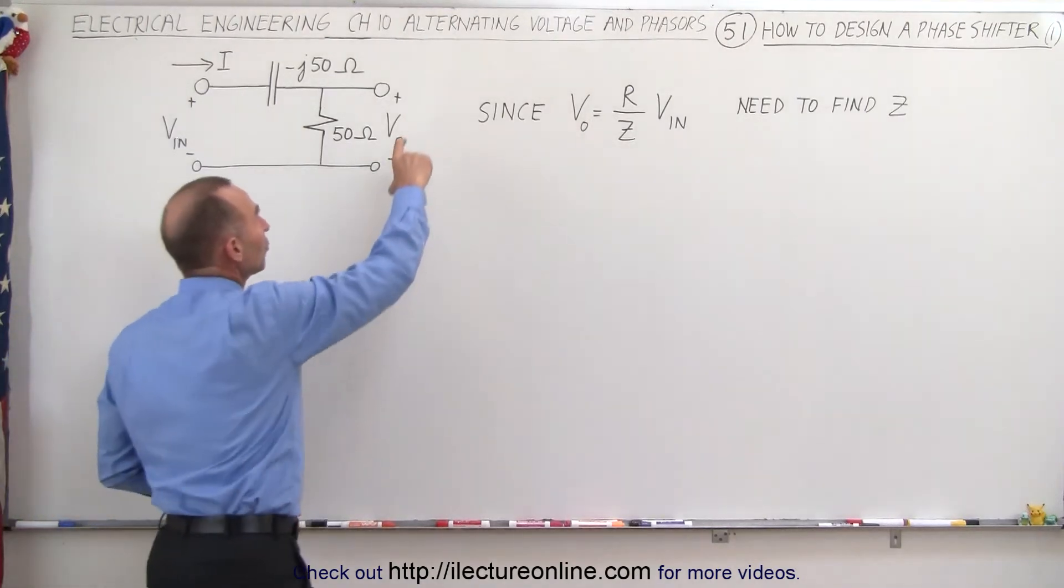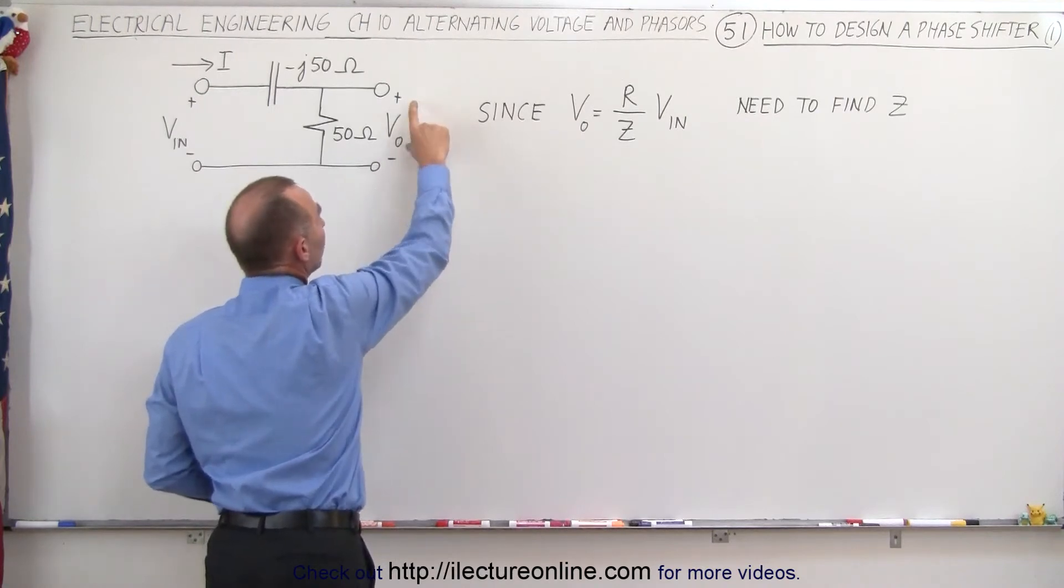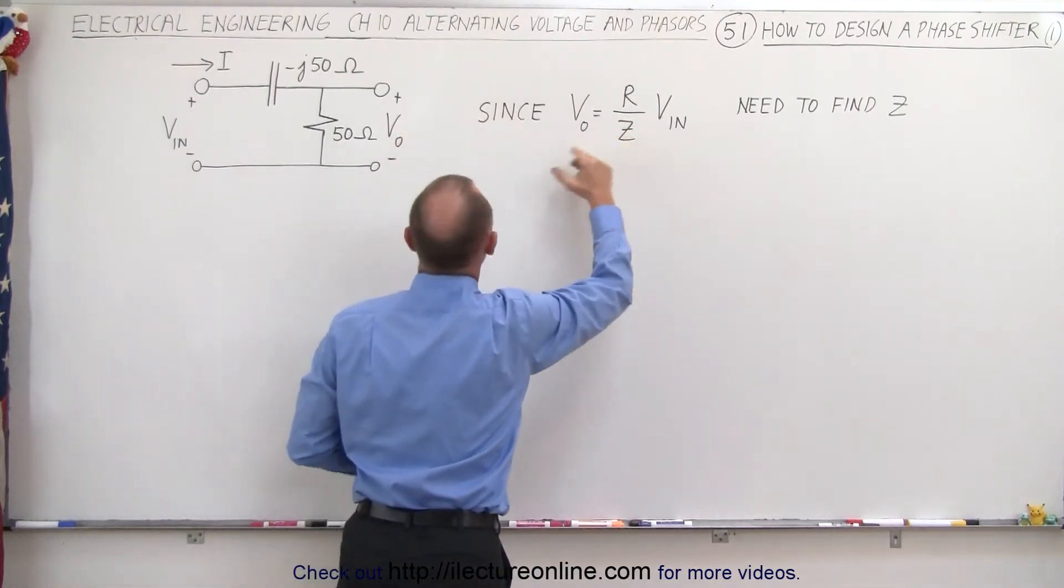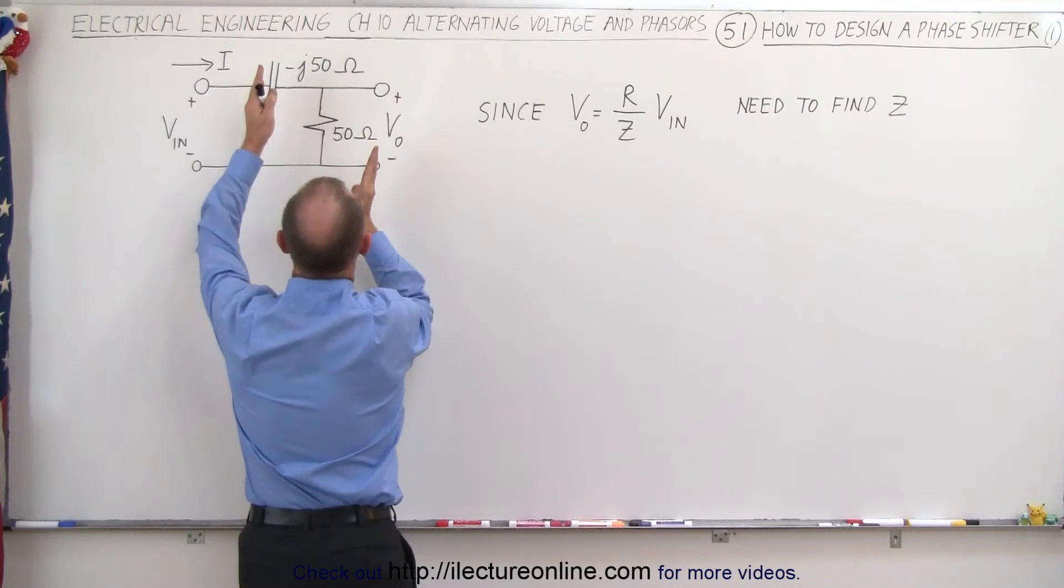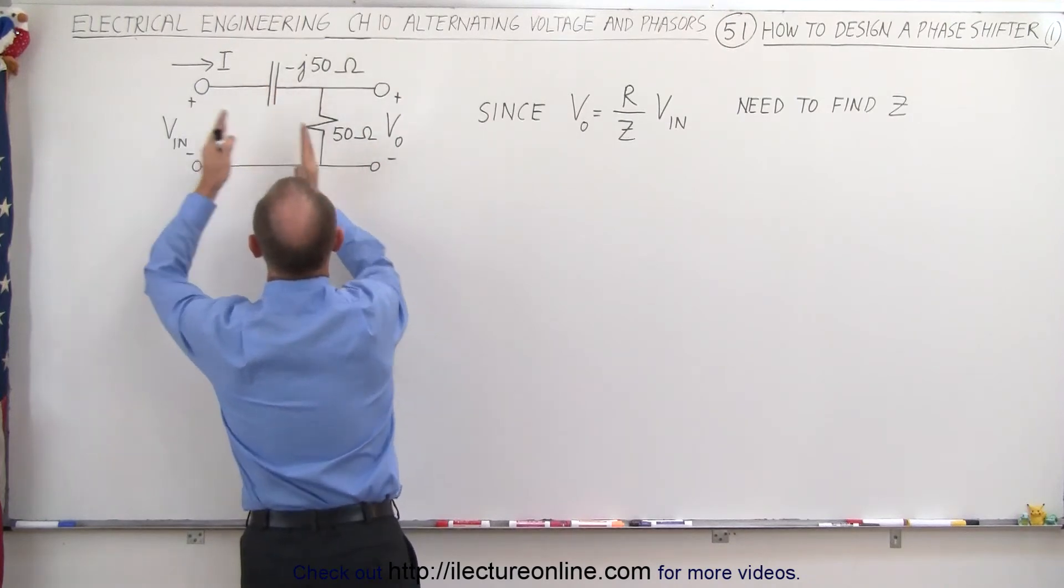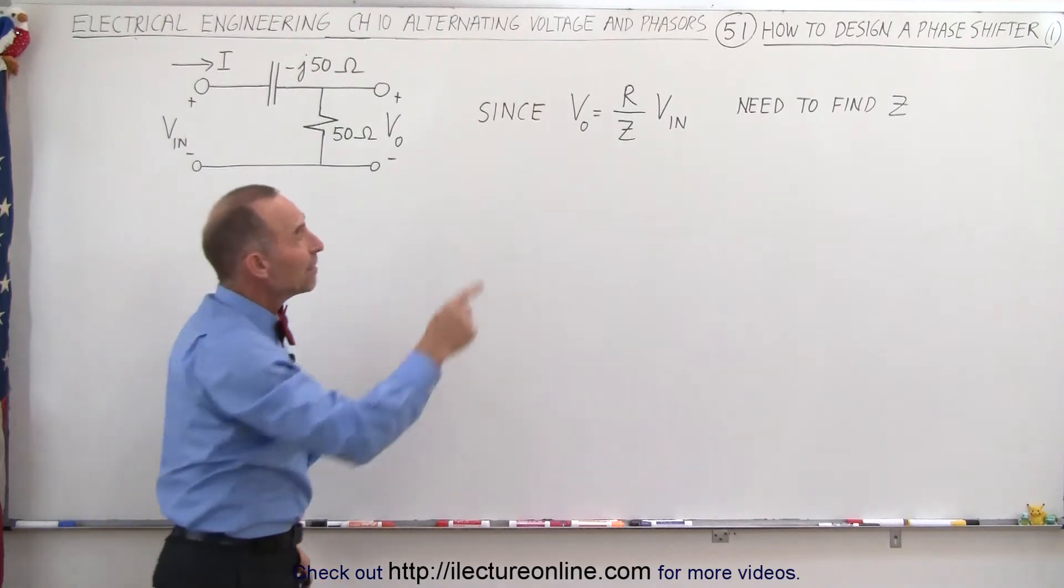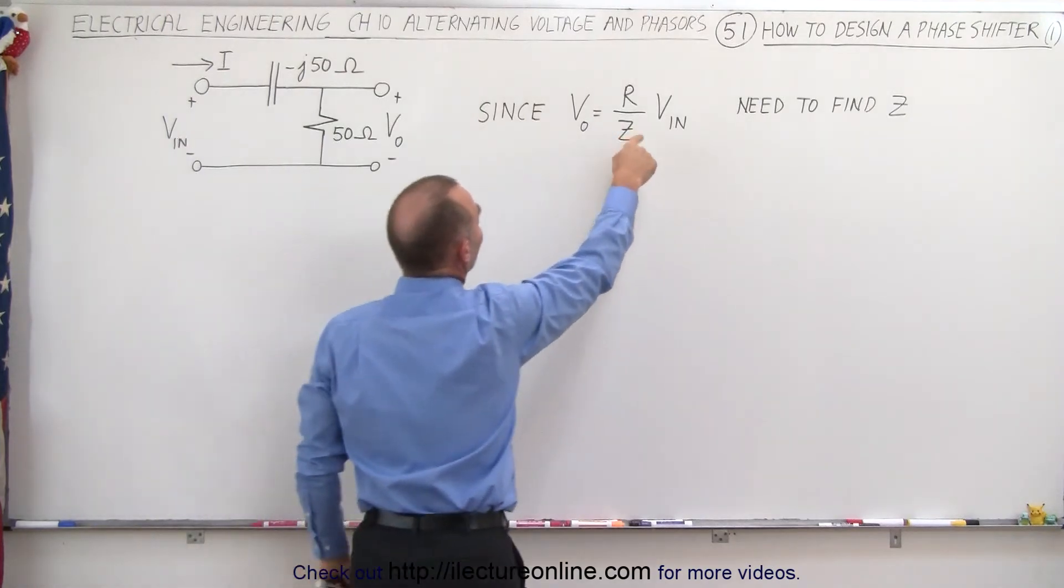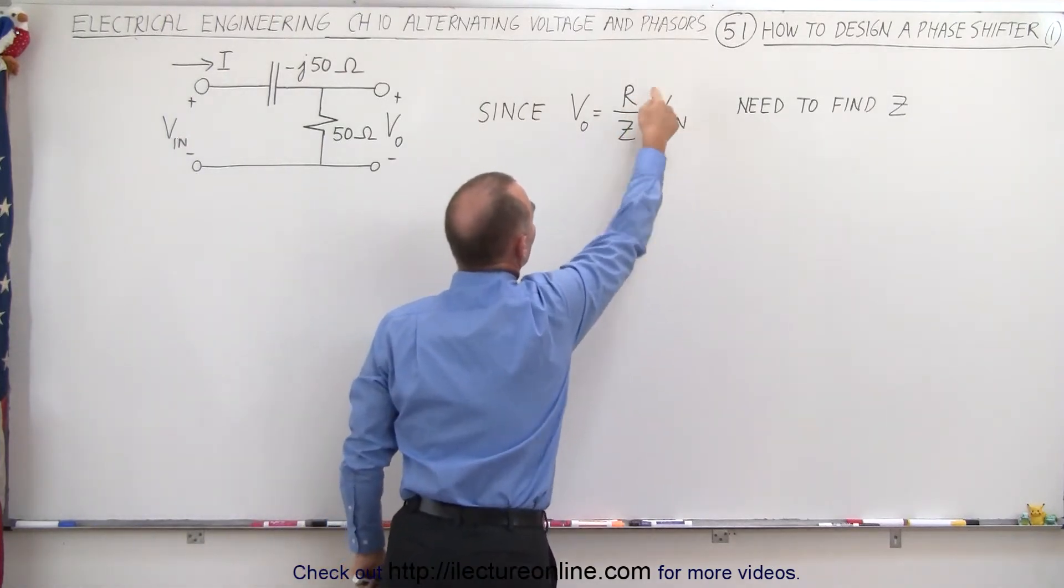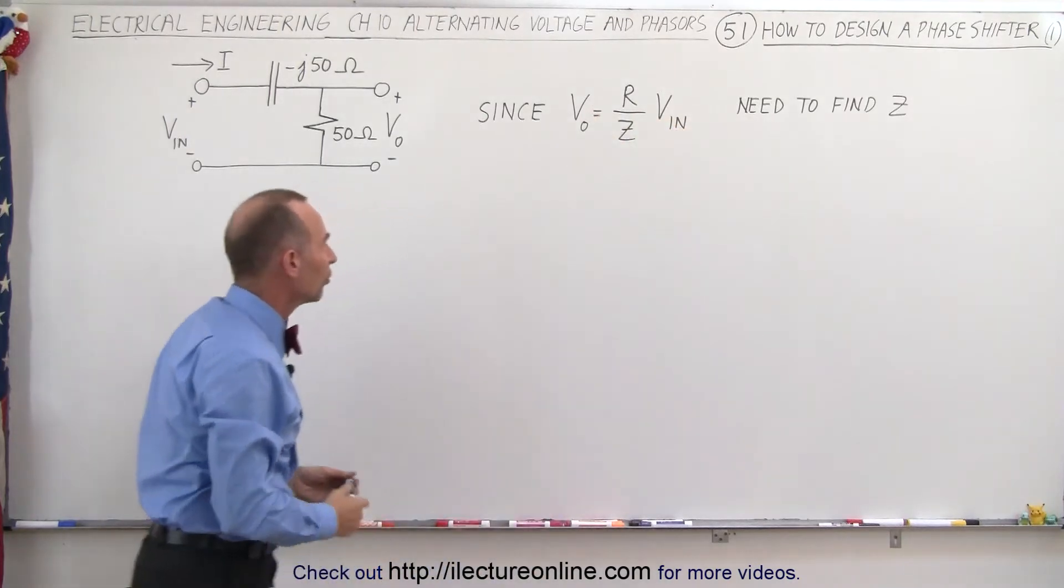Also, the voltage across the resistor will be equal to the ratio of the resistance divided by the total impedance of the circuit times the input voltage. And so now let's go ahead and find the impedance of the circuit, divide the impedance into the resistance, multiply it by the input voltage to get the output voltage.